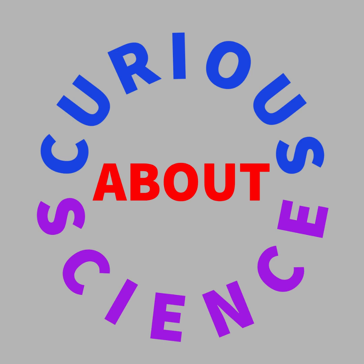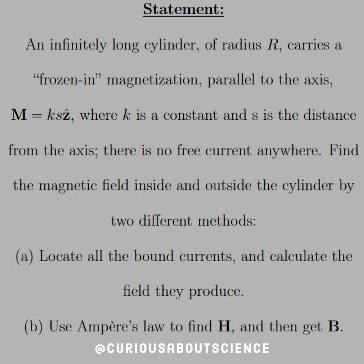Alright, more magnetization before we move on to the next section. The statement reads, an infinitely long cylinder of radius R carries a frozen-in magnetization parallel to the axis, this time M equals KS Z hat, where K is a constant and S is the distance from the axis. There is no free current anywhere.